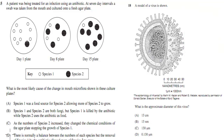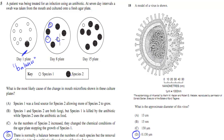Welcome back. The correct answer for the microflora question was D. Here we have everything in balance — more of species 1 than species 2 — but then antibiotics cause an imbalance: species 1 dies, leaving more space for species 2 to take over and replicate. That is the microflora imbalance, so D was correct.